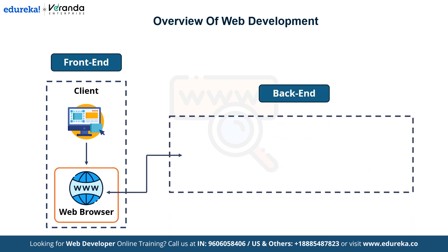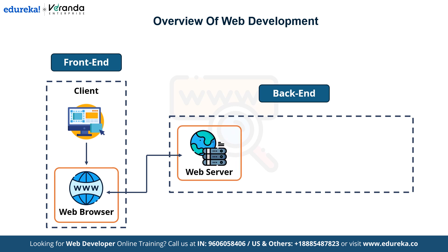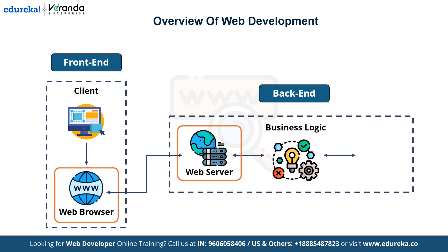Then we have the backend. The backend handles behind-the-scenes tasks to ensure that the website functions smoothly. It starts with a web server which processes user requests and sends them to the business logic layer. This layer executes operations, processes the data and interacts with the databases when needed before sending the response back to the browser. In summary, the frontend focuses on user experience while the backend ensures efficiency and data delivery.